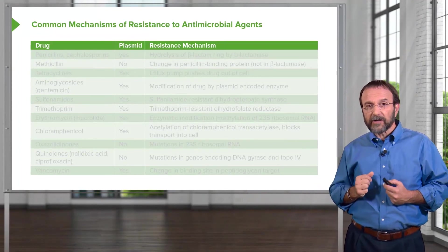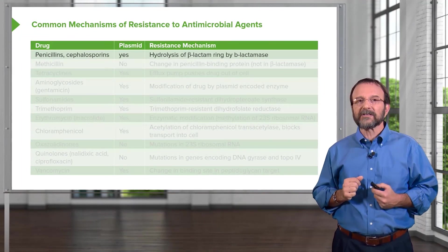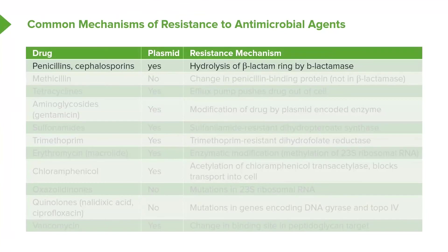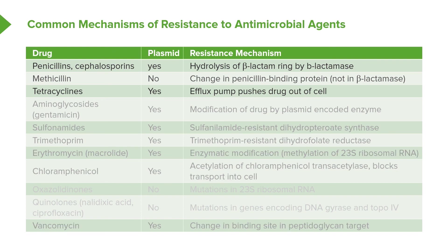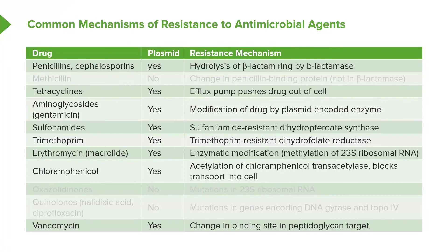Let's end with a chart showing common mechanisms of resistance to antimicrobial agents. Penicillins and cephalosporins are hydrolyzed by beta-lactamases, which are carried on plasmids. Methicillin resistance involves a change in the penicillin-binding protein rather than a beta-lactamase, and this is not plasmid-borne. Tetracycline resistance encodes a pump that pushes the drug out of the bacterial cell — this is a plasmid-borne resistance factor. Looking across all these various mechanisms — modification of the drug, synthesis of alternate substrates, acetylation, changes in binding sites — a striking number are encoded on plasmids, making it easy for resistance to spread from bacterium to bacterium and making bacterial infections very difficult to treat.